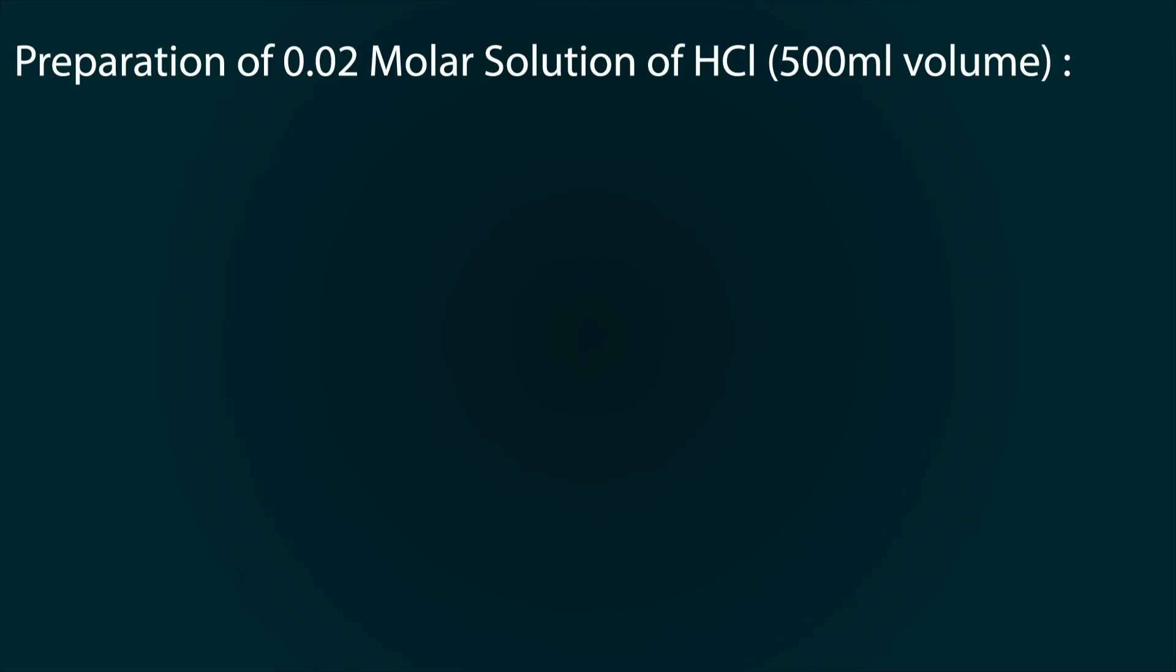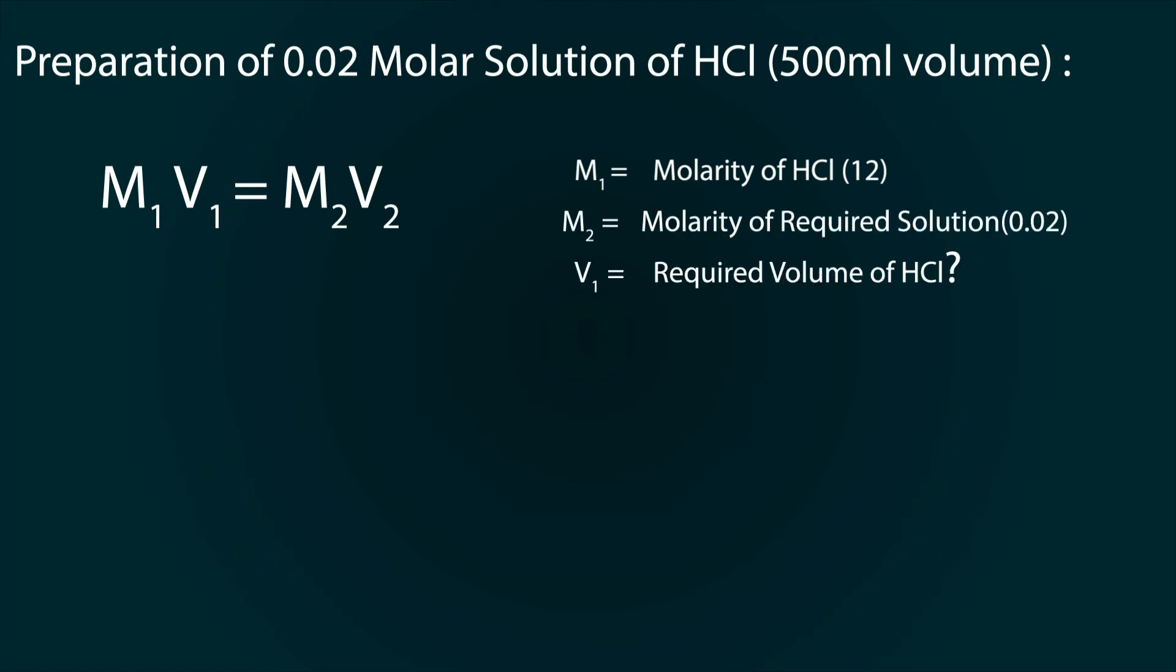Now, to find out the volume, we will use the formula M1V1 equals M2V2, where M1 is the molarity of HCl which we found as 12, M2 is the molarity of our required solution which is 0.02, V1 is our required volume of HCl from the 12 molar solution, and V2 is our final solution volume which is 500 milliliters.